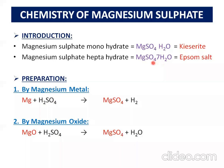Next, magnesium sulfate can also have 7 water molecules present, giving us magnesium sulfate heptahydrate.